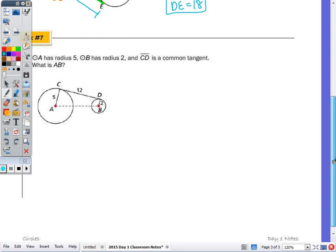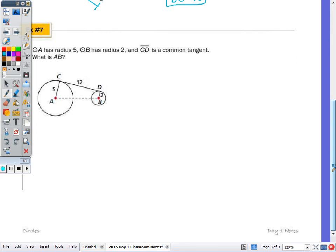Number 7: circle A has radius 5, circle B has radius 2, and CD is a common tangent. What is length AB? The intersection of a radius and tangent line is a 90-degree angle at both points. I'll draw a line parallel to CD to create a rectangle. If this side is 2, this length is also 2, giving a difference of 3. Since CD is 12, this parallel side is also 12.